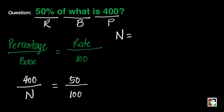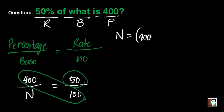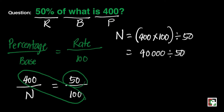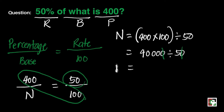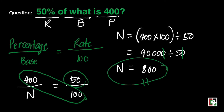Let us substitute: 400 over N is equal to 50 over 100. To find N, just do cross multiplication. That will be 400 times 100 divided by 50 — that's 40,000 divided by 50. We can cancel the two zeros; what's left is 4,000 divided by 5, and we get 800. So N equals 800, meaning 50% of 800 is equal to 400.